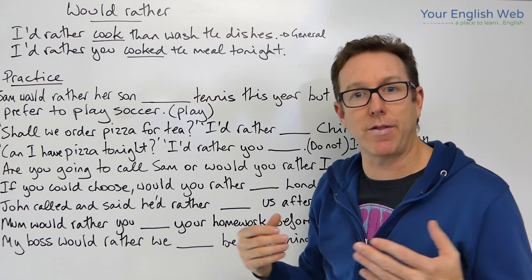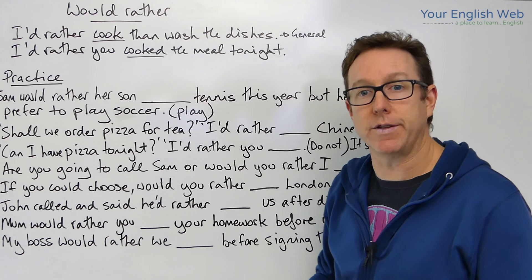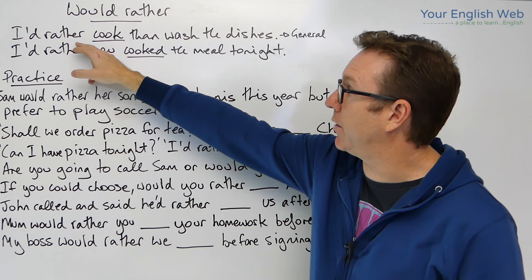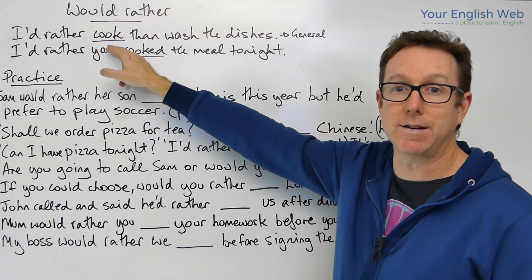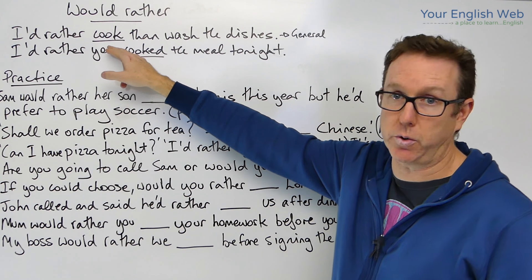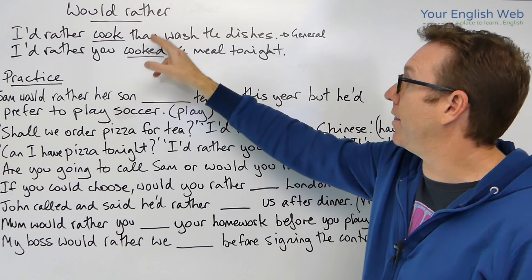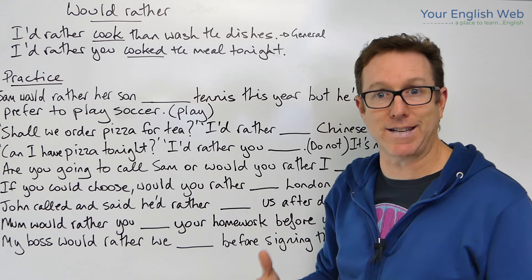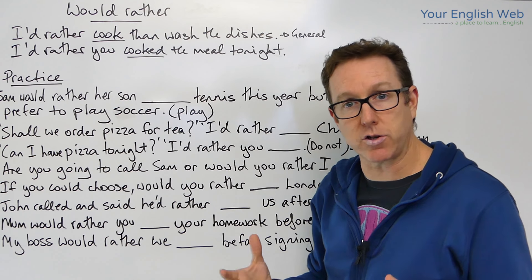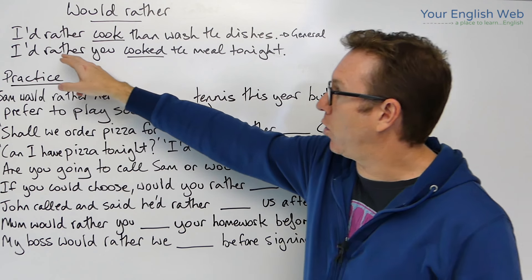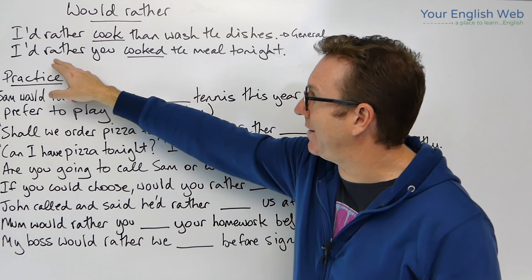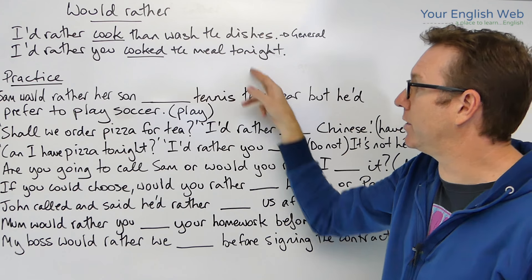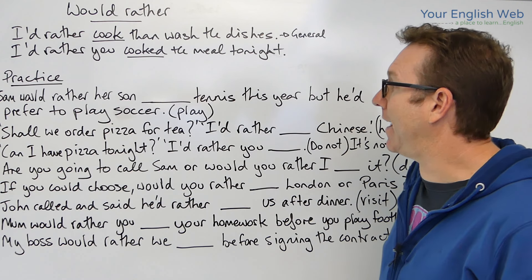Let's look at the first example: 'I'd rather cook than wash the dishes.' That's a general statement. The structure here is 'I'd rather' plus the infinitive without 'to': 'I'd rather cook than wash the dishes.' That's how we use the basic structure.